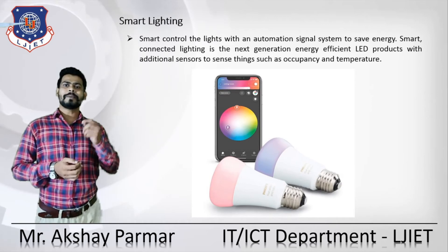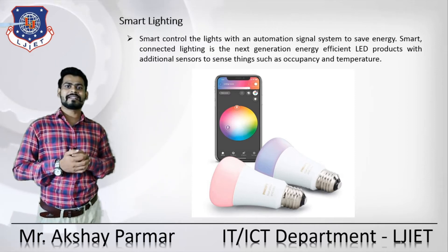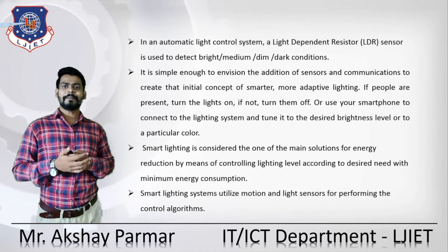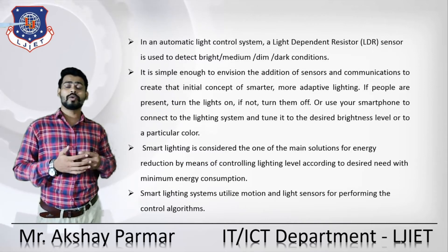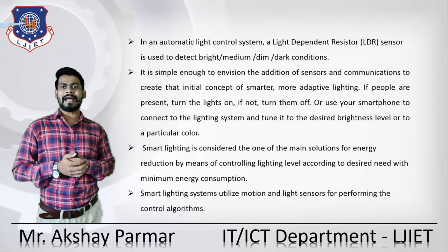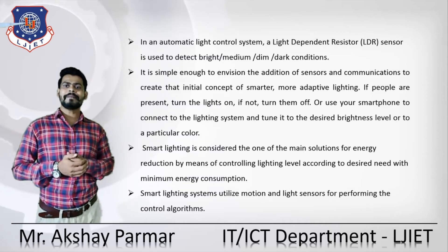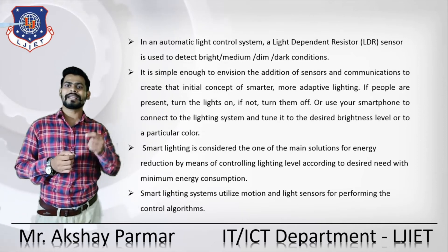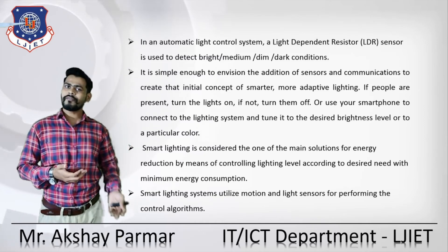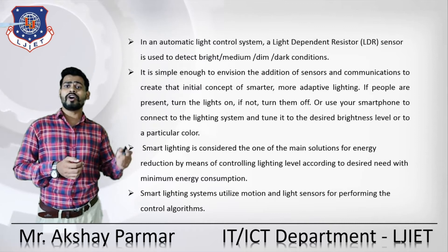After that, smart lighting. The smart control of lights with an automated signal system saves energy. Smart connected lighting is a next-generation energy-efficient LED product with additional sensors to sense things such as occupancy and temperature. In an automatic light control system, a light dependent resistor (LDR) sensor is used to detect light — medium, dim, and dark conditions. With that data, we can handle the light. It is simple enough to envision the addition of sensors and communication to create a smarter, more adaptive lighting system: if people are present, turn the light on; if not, turn them off. Alternatively, use a smartphone to connect to the lighting system and tune it to the desired brightness level or a particular color.